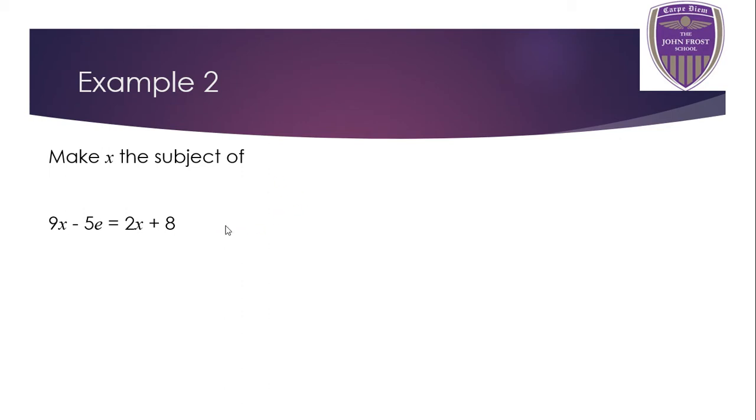Example 2. Again, perhaps pause the video on this one and have a go. It's very similar to the previous one. Okay, welcome back. Let me write it down again real quick. So I hope we agree the first thing to do is to get rid of these 2x's by taking them away. 9x take away 2x is 7x minus 5e, they're gone, and you're just left with 8.